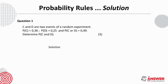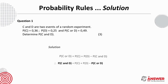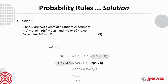Looking at the solution now, we take the equation that is true for any two events and make P(C and D) the subject. Then we substitute all the values given and calculate the probability of C and D.